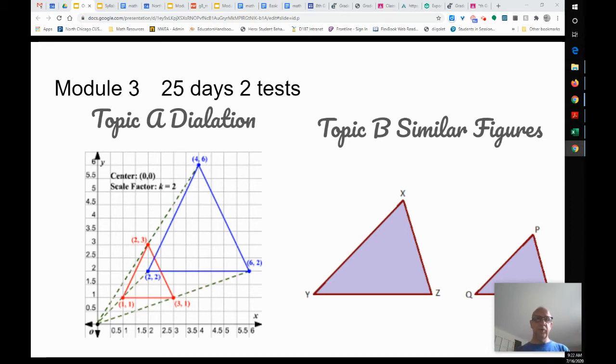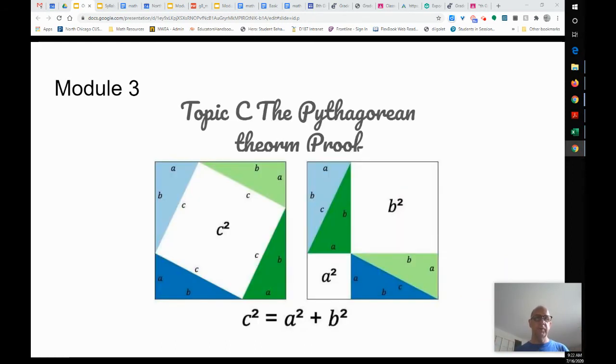Topic A, we're going to use the dilation to make them bigger or smaller. Topic B, we're going to figure out if they're similar. And then topic C is the Pythagorean theorem. We're going to look at it a little more formally. And you can see down here that's c squared equals a squared plus b squared. So we're going to figure out what that exactly means.